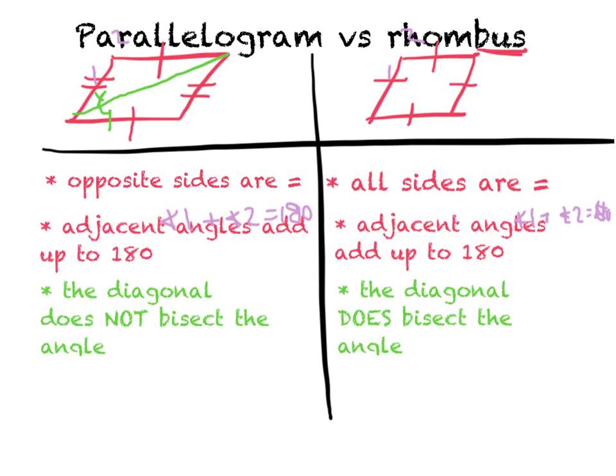However, that's what's special about this diagonal of the rhombus. When I draw it in the rhombus, I just want to stress that it does bisect the angle. So X and X. And that's because you have equal sides. So that's a huge deal. The diagonal does bisect the angle in a rhombus.